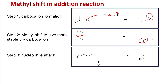Finally, the last step for the addition will be the nucleophilic attack: the bromide that left in the first step will attack the tertiary carbocation, and that will generate the tertiary alkyl halide instead of the secondary alkyl halide.